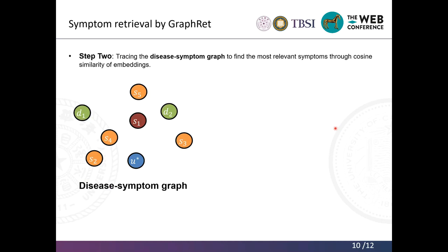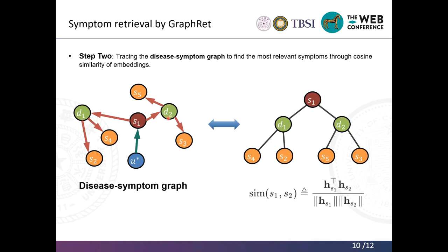Step two is to trace the disease-symptom graph to find the most relevant symptoms through cosine similarity of embeddings. Since we have the NER task, we know exactly the symptom words in the raw notes — for example, S1 provided by the user's initial description. We can trace our graph to get the neighbors of symptom 1, for example disease 1 and disease 2. At the same time, we can trace the neighbors of disease 1 — S2 and S4 — and neighbors of disease 2 — S5 and S3. We transform this path to a tree structure from our root node, symptom 1, to leaf nodes symptom 4, 2, 5, and 3. We then compute similarity based on the cosine similarity of the embeddings of S1 and these leaf symptom nodes.